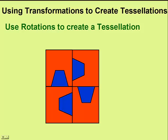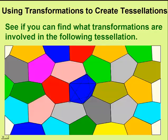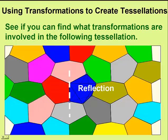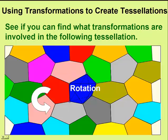Now we'll take other similar shapes and piece them together to form our tessellation. This tessellation is created by using rotations. In the following tessellation, see if you can identify the various types of transformations that occur — you can find translations, reflections, and rotations.